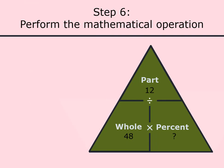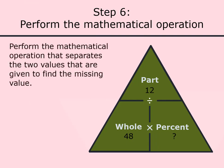Step 6: Perform the mathematical operation. Perform the mathematical operation that separates the two values that are given to find the missing value. For this problem, we'll do 12 divided by 48 to give us an answer of 0.25 or 25 percent.